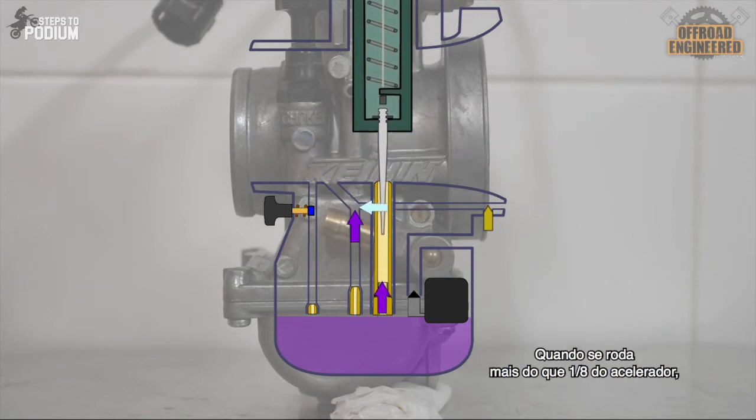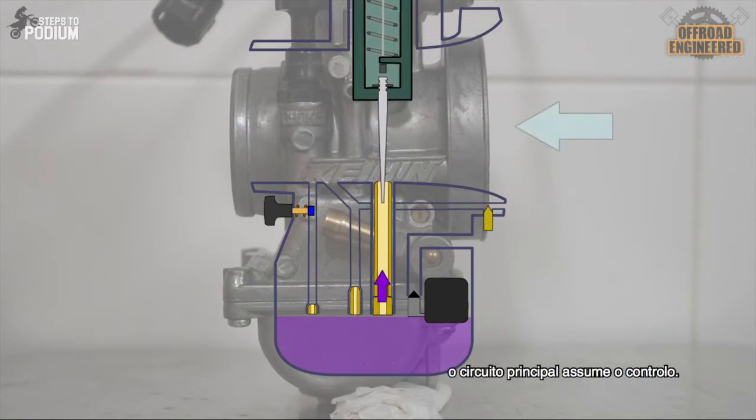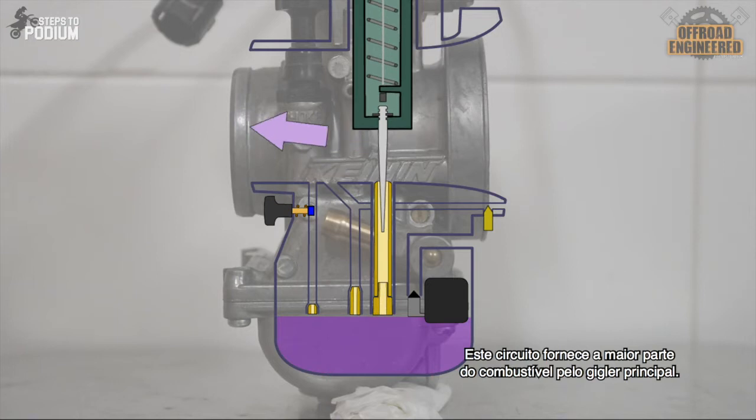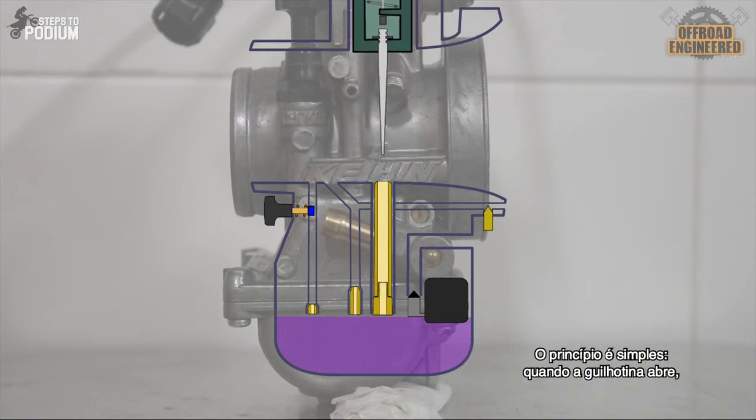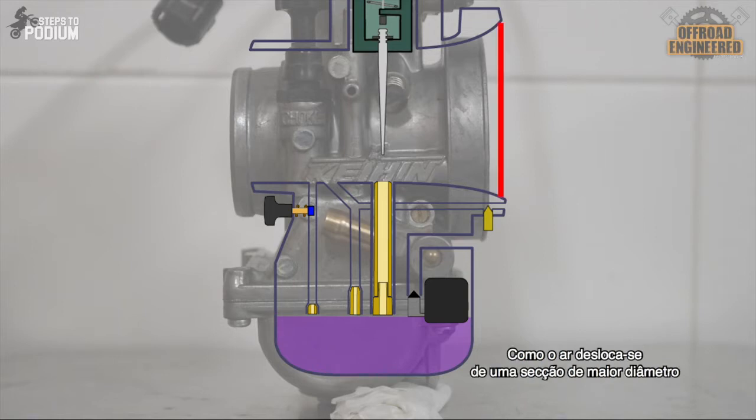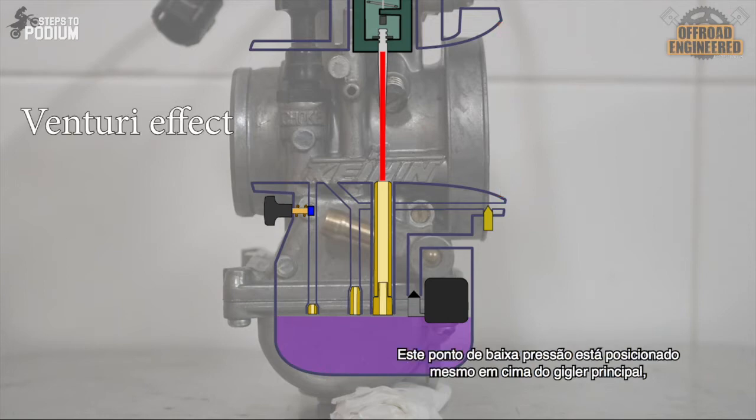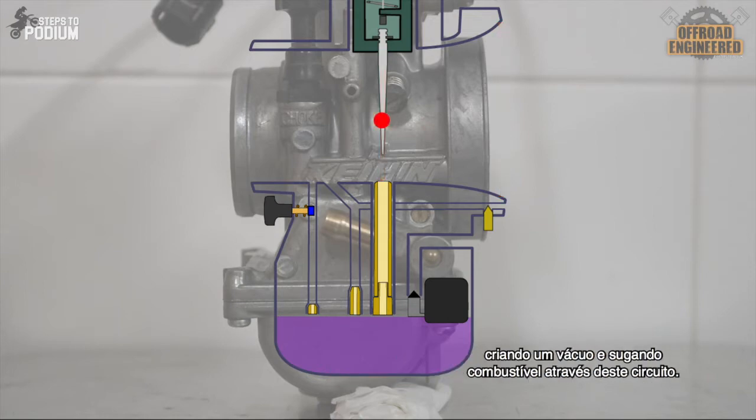When you twist more than around 1/8 of throttle, the main circuit steps in, which provides the main amount of fuel according to the throttle response through the main jet. The principle is simple. When the slide lifts, the engine sucks air through the throat. Since the air is flowing from a larger cross section to a smaller cross section, the air has to accelerate, which in turn reduces the pressure where the cross section is the smallest. This low pressure point is placed right on top of the main jet, which creates a vacuum and sucks fuel through the circuit.